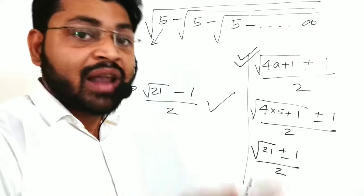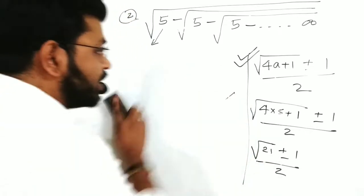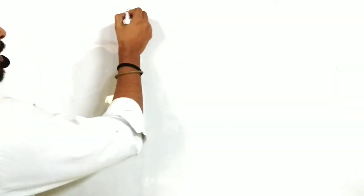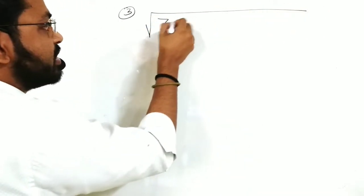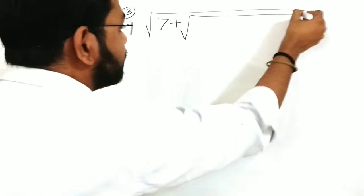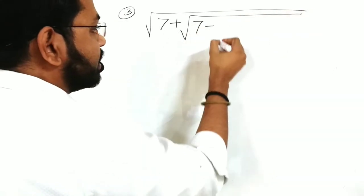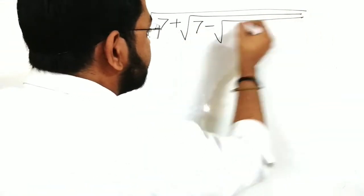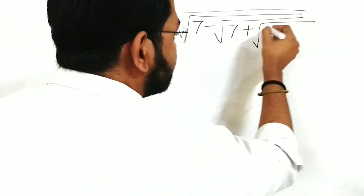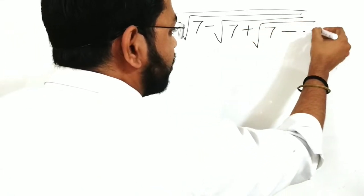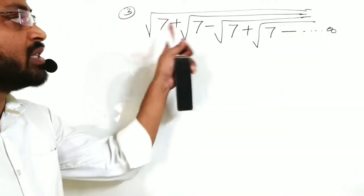This is the last trick — the third. If you have a question like √(7 + √(7 - √(7 + √(7 - ...)))), with alternating plus and minus, the formula changes. The base is plus, minus, minus, plus, minus...